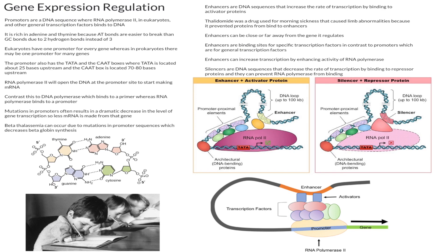A disease that can occur due to issues with promoters is called beta thalassemia. Beta thalassemia can occur due to mutations in promoter sequences, which decreases beta globin synthesis. You need beta globins to properly form hemoglobin, which is what your red blood cells use to deliver oxygen to the rest of your body. Without proper beta globin and thereby hemoglobin, patients can have severe anemia, and some viruses can even kill them, such as parvovirus. Mutations in promoters often result in a dramatic decrease in the level of gene transcription.